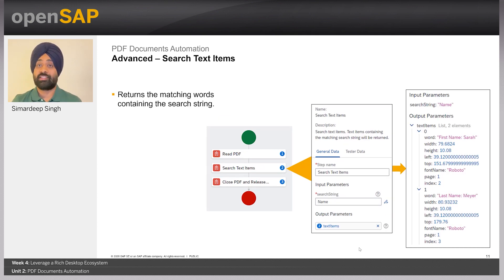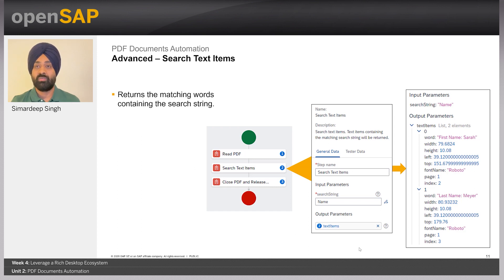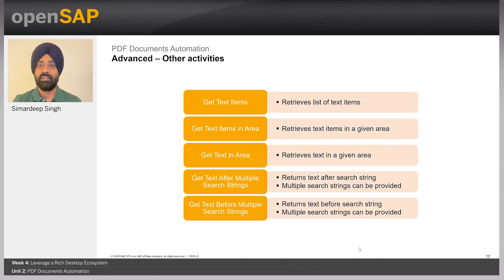Another advanced activity is searchTextItems. This is a very useful activity because it returns all text items with a matching string. For example, if we want to grab all text items containing the search string 'name', both 'first name' and 'last name' contain the substring 'name', so it will return those text items. A text item is a complex data type that returns different parameters such as word, width, height, and others. That is why it is part of the advanced activities — searchTextItems returns all the properties of a specific text item.